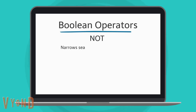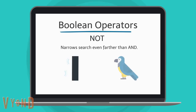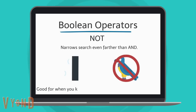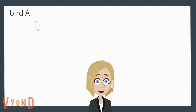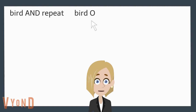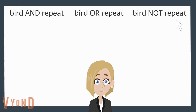The use of NOT can further narrow your search. This is useful when you are thinking that one synonym or definition is unquestionably not what you want in your search. So using the Boolean operators and the definition of parrot — either a bird or to echo and repeat — where do you want to search next?